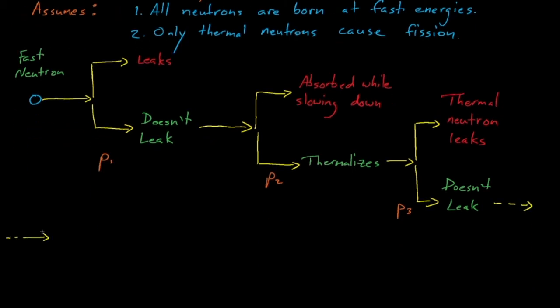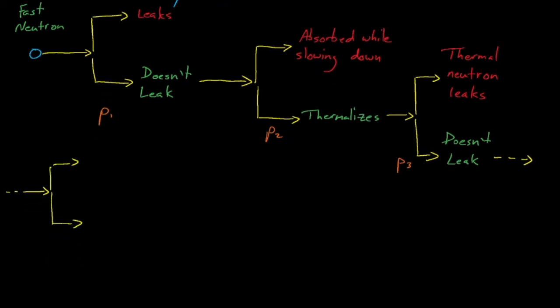Since we know that our neutron doesn't leak, we know that it must be absorbed by something in the reactor. The neutron can either be absorbed by structural materials, such as by the pressure vessel or the fuel clad, or it can be absorbed by the fuel. P4 is the probability that the neutron is absorbed by the fuel.